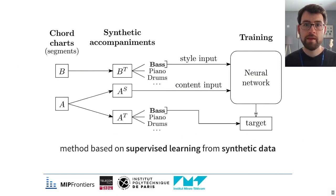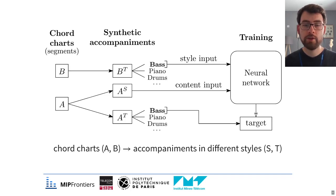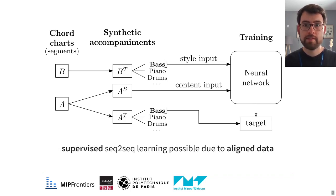Our method is based on supervised learning from synthetic data. To generate the training data, we start from chord charts, here denoted A and B, and use accompaniment generation software to generate accompaniments from them in a large number of different style pairs, here denoted S and T. This data is temporally aligned, allowing for fully supervised training of a sequence-to-sequence neural network.